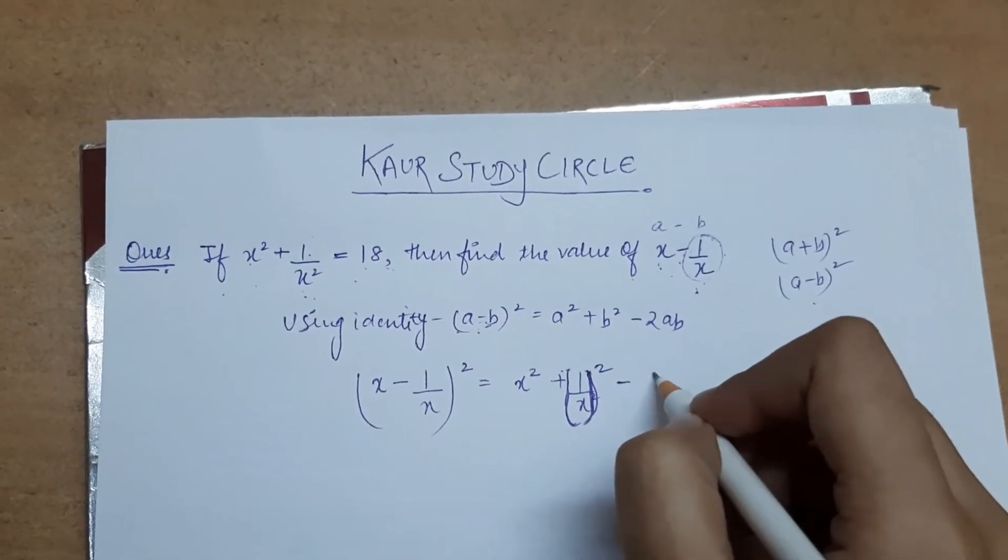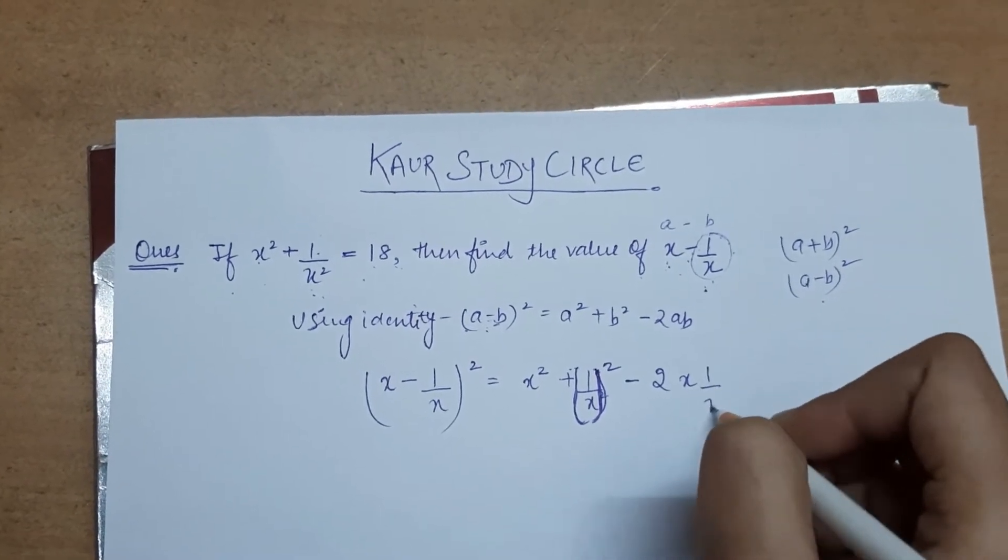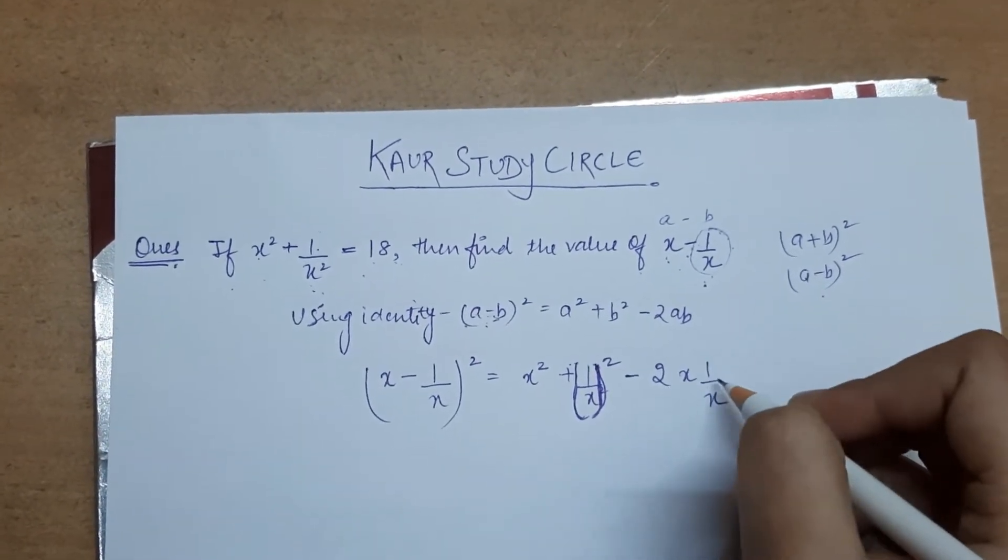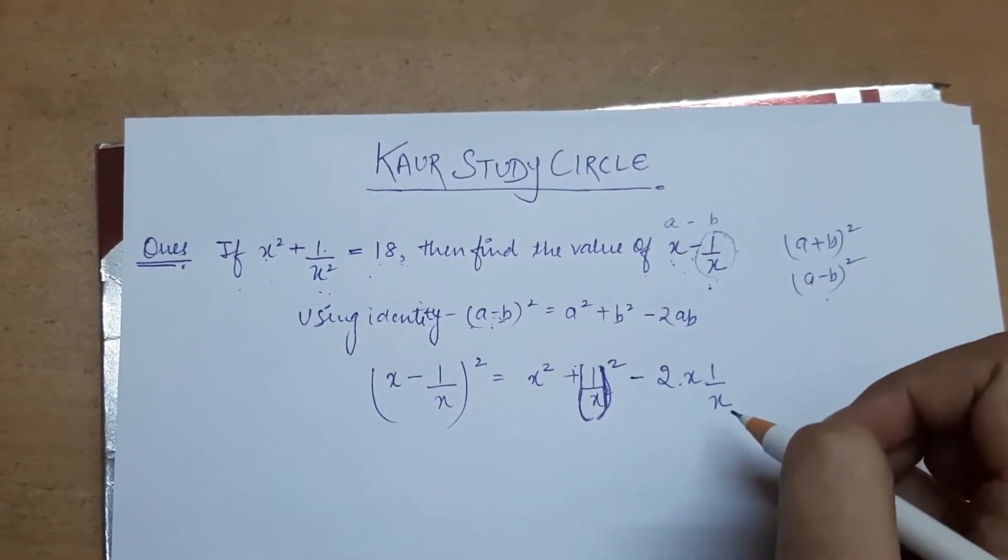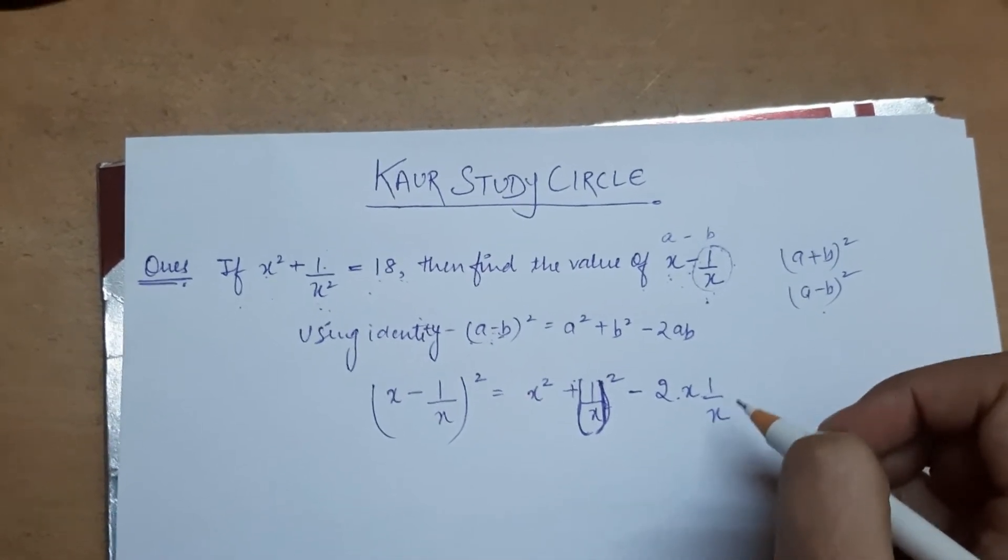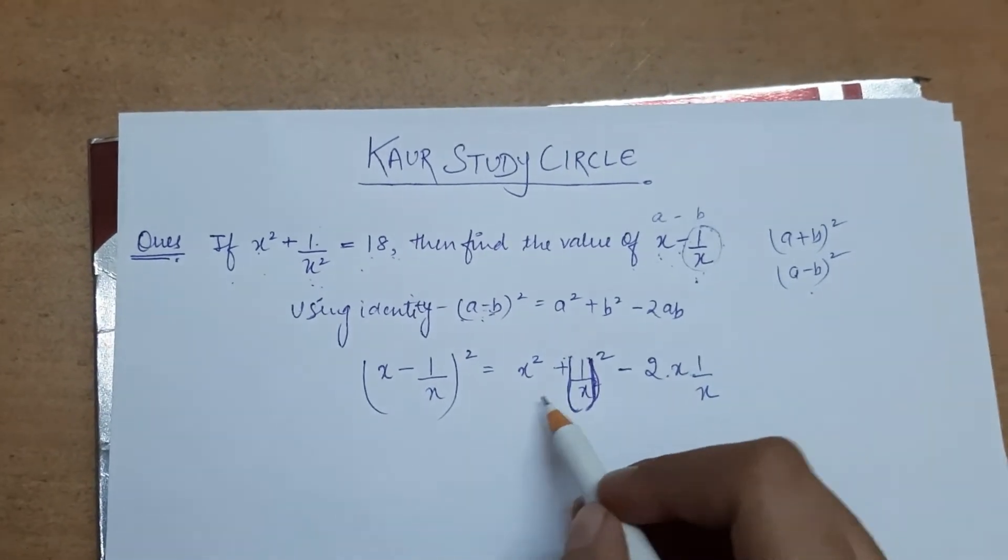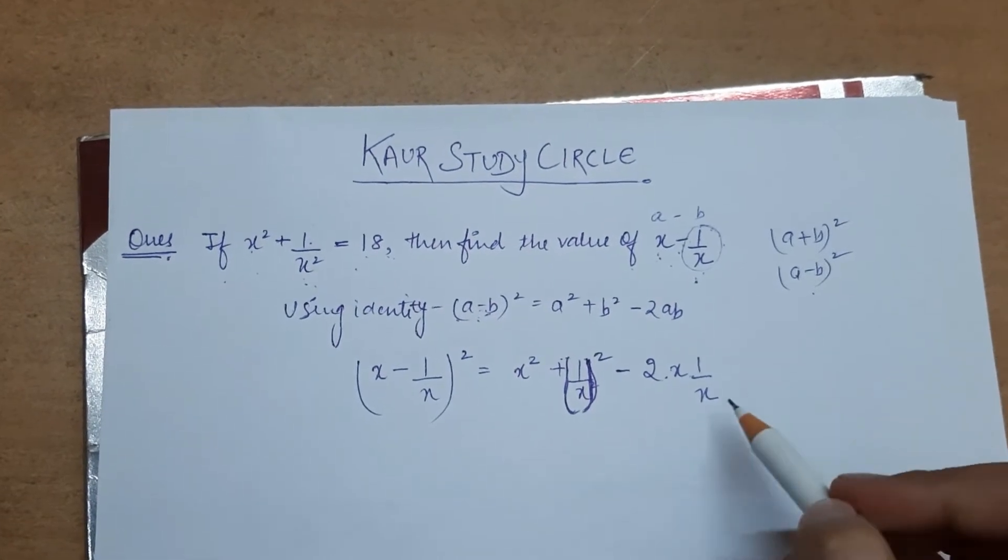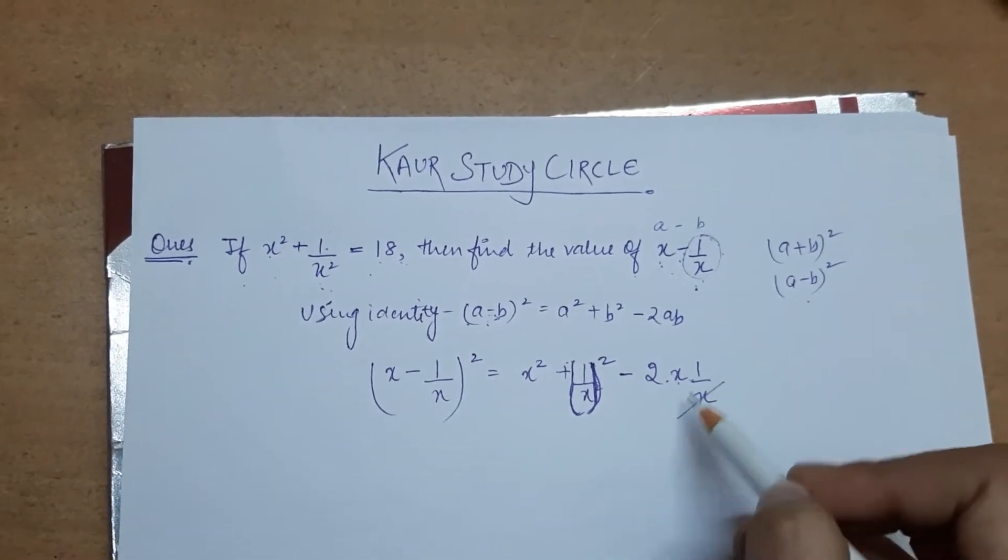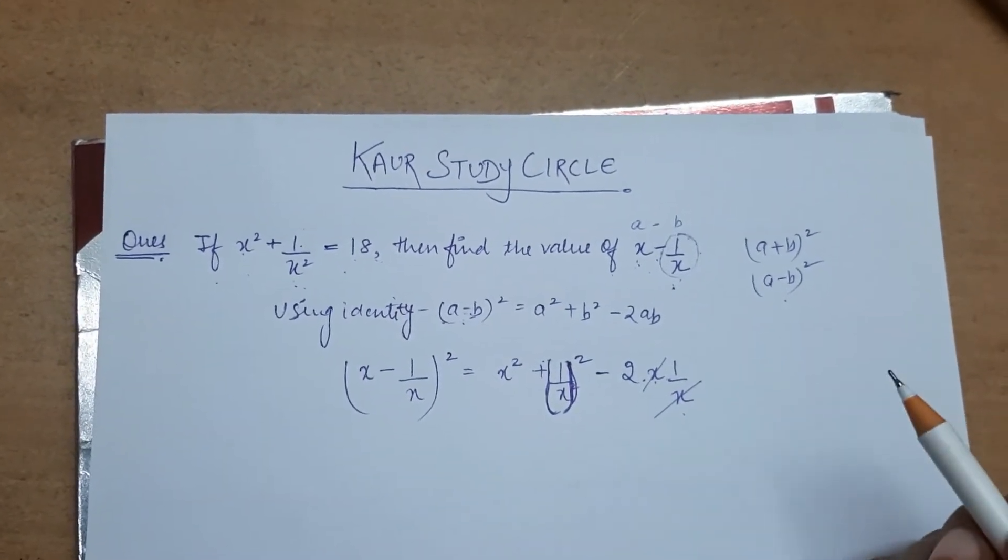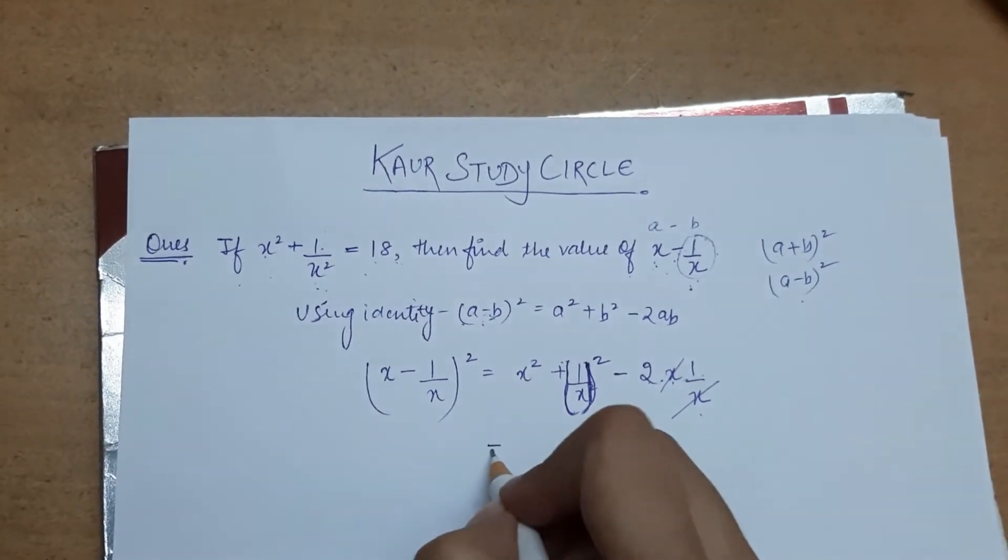Now what is minus 2ab? a value is x, b value is 1 by x. If there is no sign in the middle, it will be considered for multiplication. Now we are looking at this step and we notice something: that x is in multiplication and another x is in division, so we will cross out.